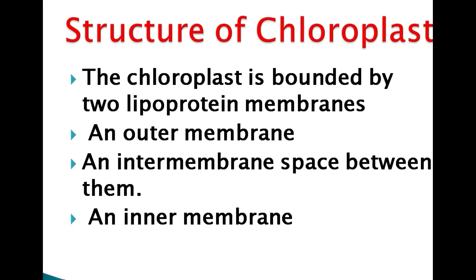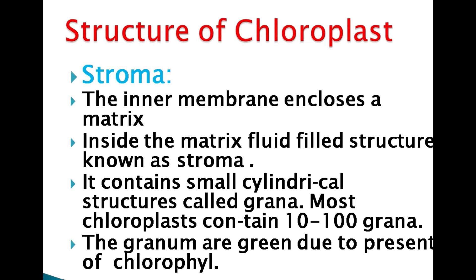Regarding the structure of chloroplast: it is bounded by two lipoprotein membranes, meaning it is a double membranous organelle with an outer membrane and an inner membrane. The intermediate space lies between them. The inner membrane encloses a fluid-filled matrix structure known as stroma, which contains small cylindrical structures called grana.